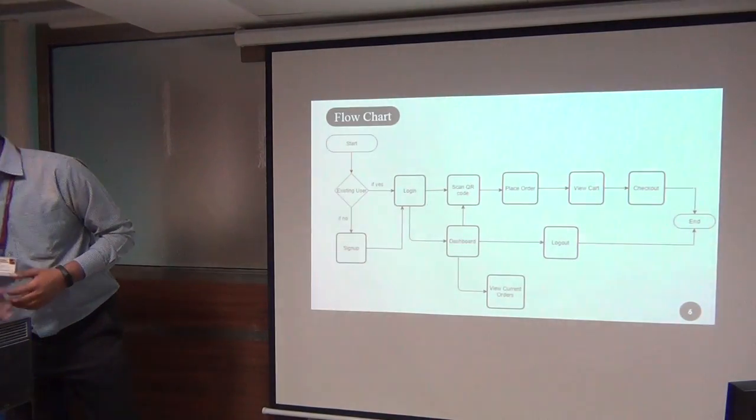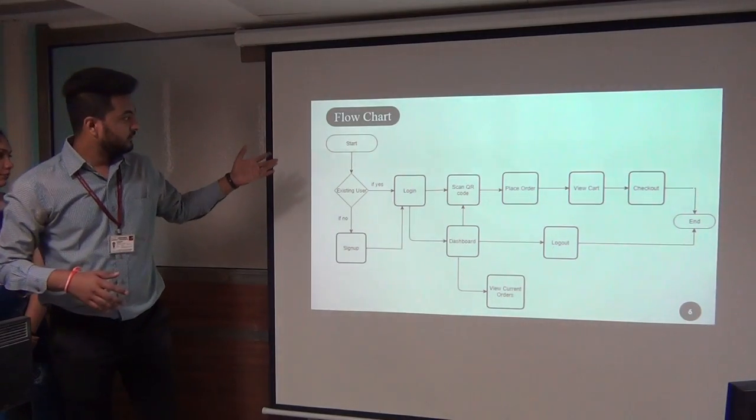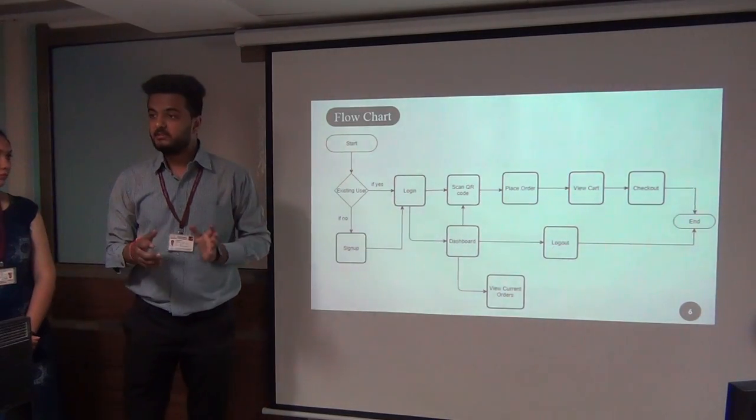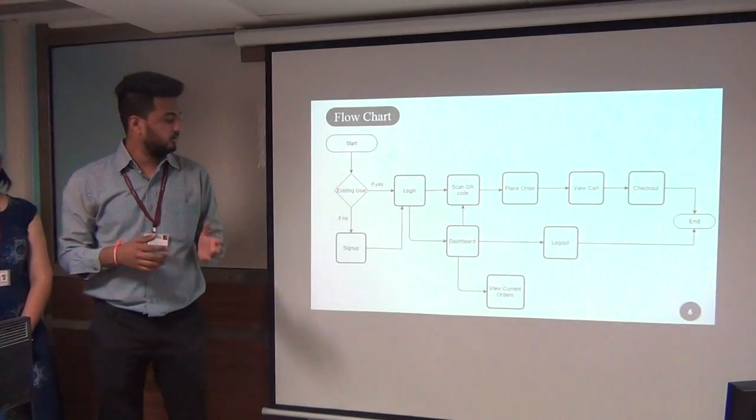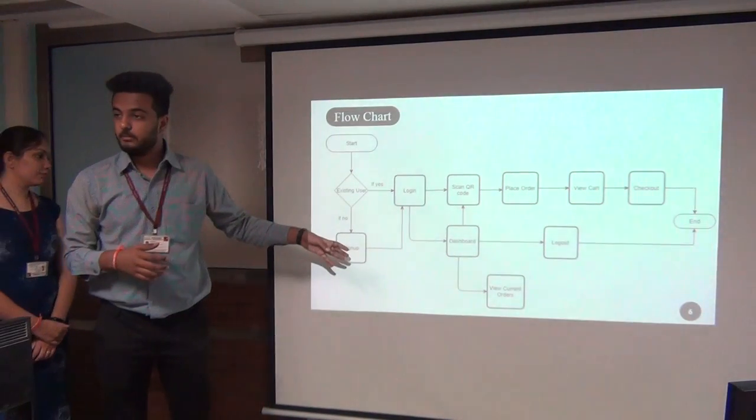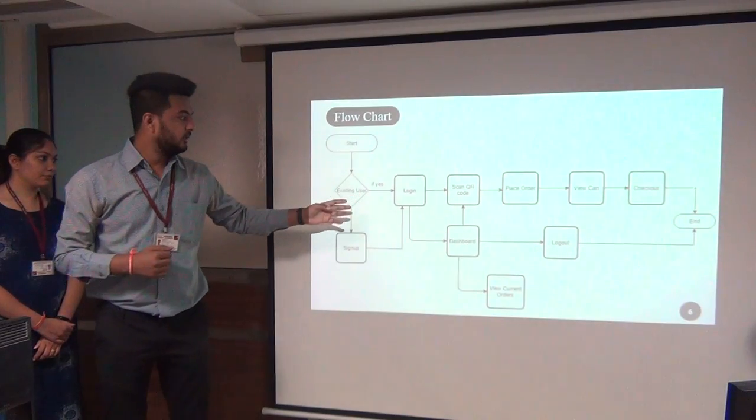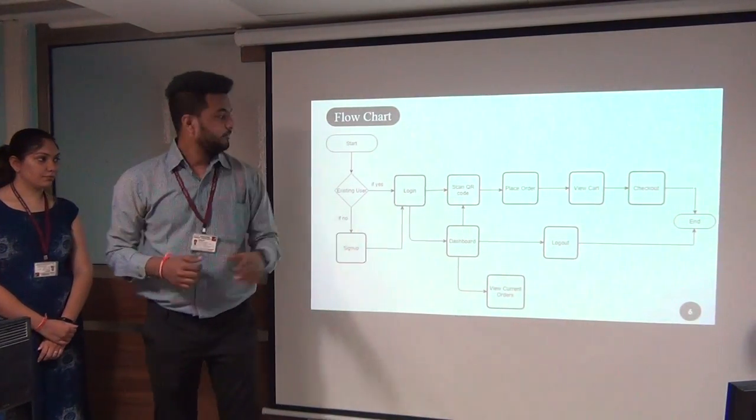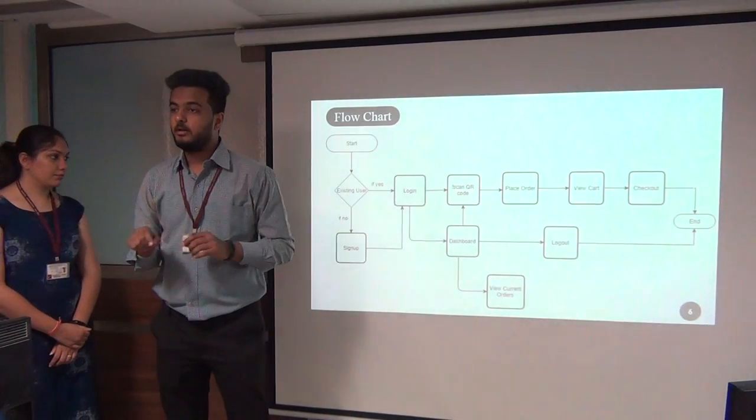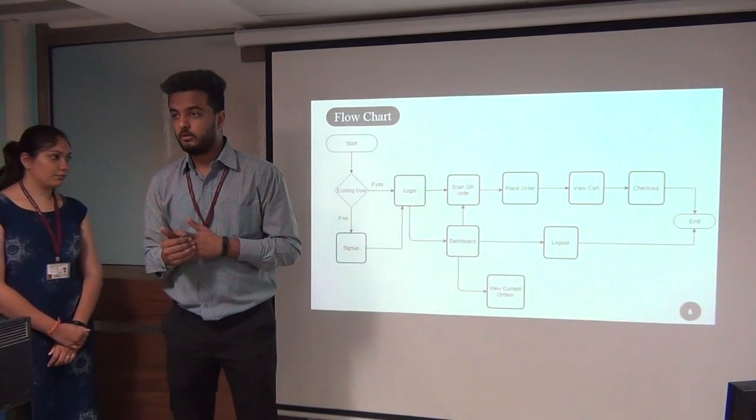So this is our flowchart. The application starts and if he is an existing user, he can login using his email ID used when registration. If not, then he can sign up in our application and go to the login page. He can scan the QR code available on the poster. Then he can place the order by placing the quantity that he wants.